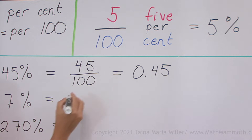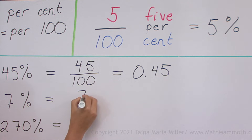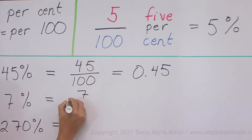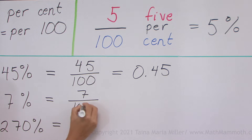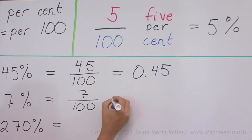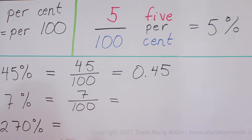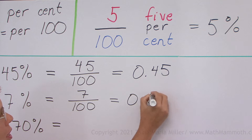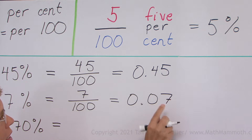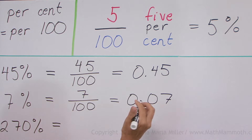7%: let's do the same. 7, then per, and then cent — the 100. So that's it as a fraction: 7 over 100. Seven hundredths as a decimal — we have two decimal digits, and here is the hundredths place.